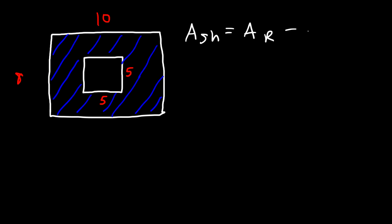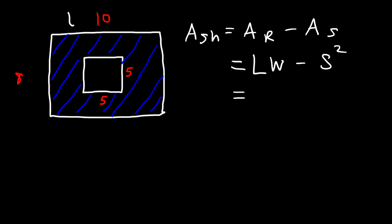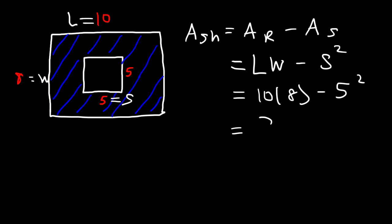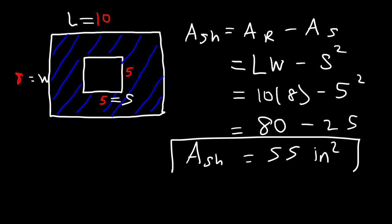In this example, the area of the shaded region is the area of the rectangle minus the area of the square. The area of the rectangle is length times width; the area of the square is side squared. The length is 10, the width is 8, and s is 5, so it's 10 times 8 minus 5 squared: 80 minus 25 equals 55. The area of the shaded region is 55 square inches.